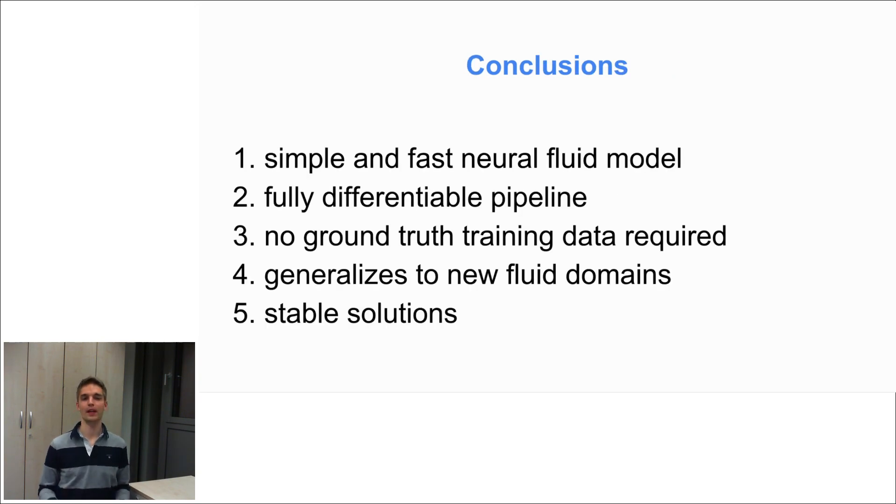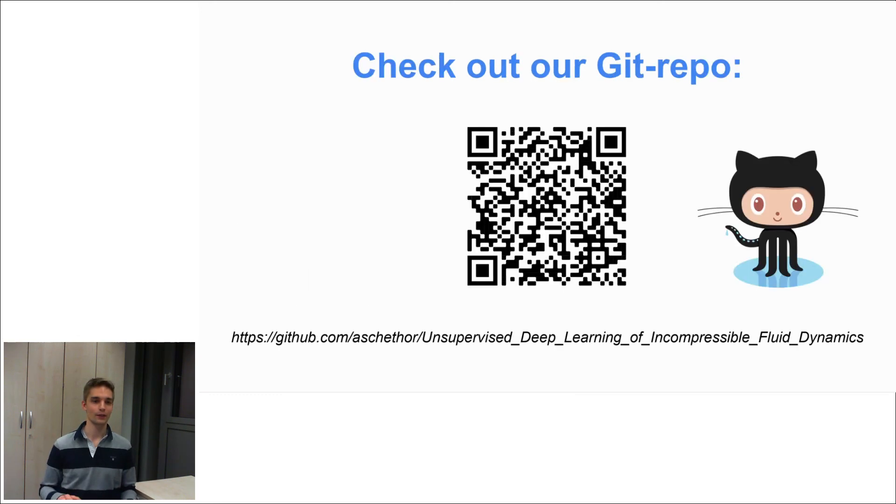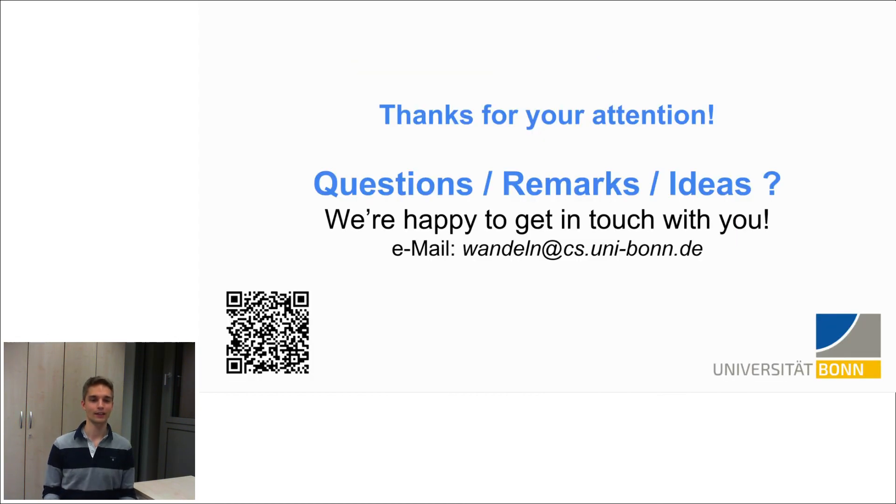So in conclusion, we propose a very simple and fast neural fluid model, which is fully differentiable and doesn't require any groundtruth data for training. It generalizes to new fluid domains and yields very stable results. If you want to reproduce or improve on our results, then please check out our GitHub repository. And thank you a lot for your attention. And if there are questions, remarks, ideas, then we are really happy to get in touch with you. Bye-bye.